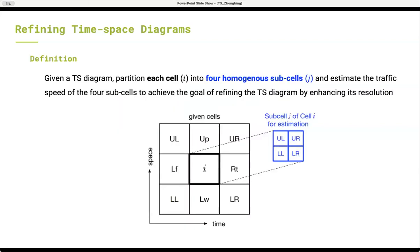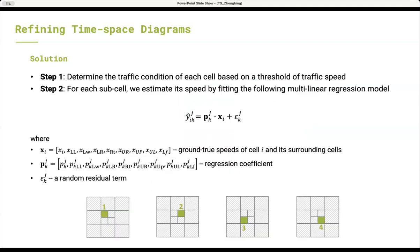We define the time-space diagram refinement problem as follows: Given a time-space diagram, partition each cell into four homogeneous sub-cells and estimate the traffic speed of the four sub-cells to achieve the goal of refining the time-space diagram by enhancing its resolution.